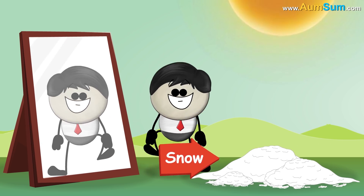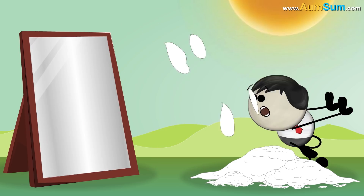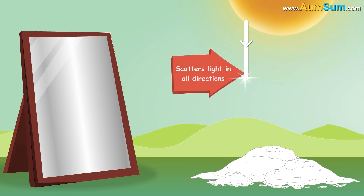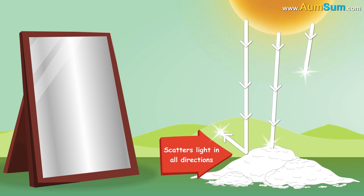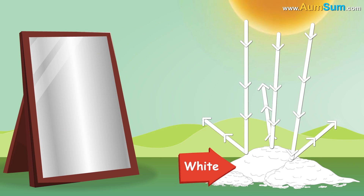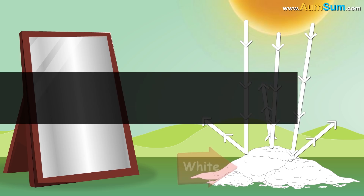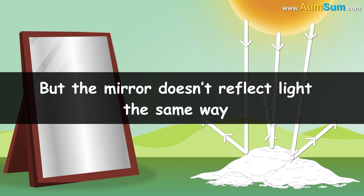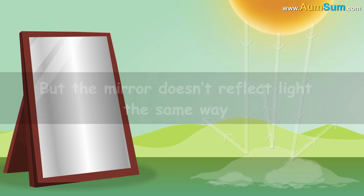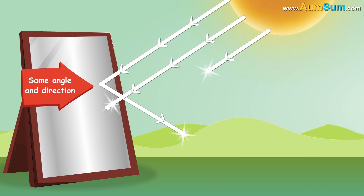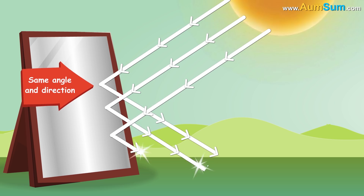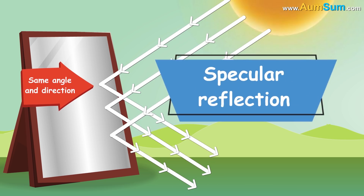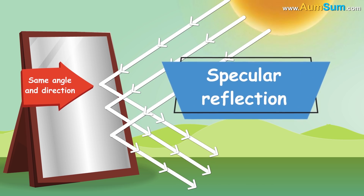But it's not. Snow scatters light in all directions, making it appear white. But the mirror doesn't reflect light the same way — it reflects light at the same angle and direction from which it arrives. This is called specular reflection.